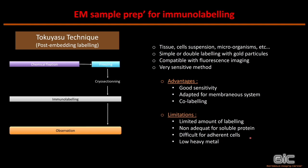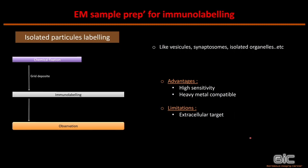We can also do isolated particle labeling — for example, with extracted vesicles, synaptosomes, or isolated organelles. After chemical fixation, you put the sample directly on a grid and perform immunolabeling directly on it. This is only possible if you have an extracellular target, since there is no permeabilization. You can achieve very high sensitivity as nothing modifies the structure, and heavy metals can be added for good structure contrast.